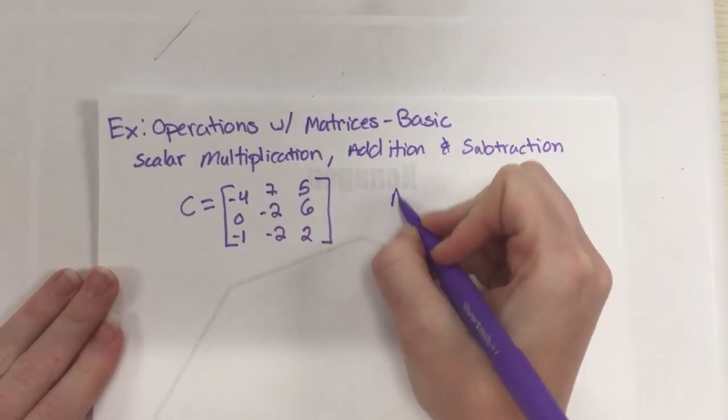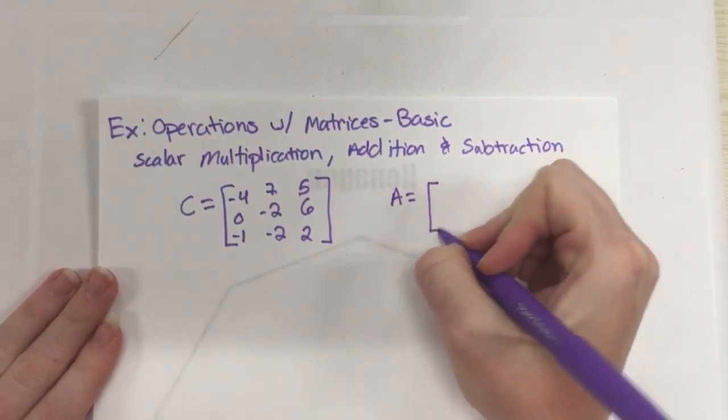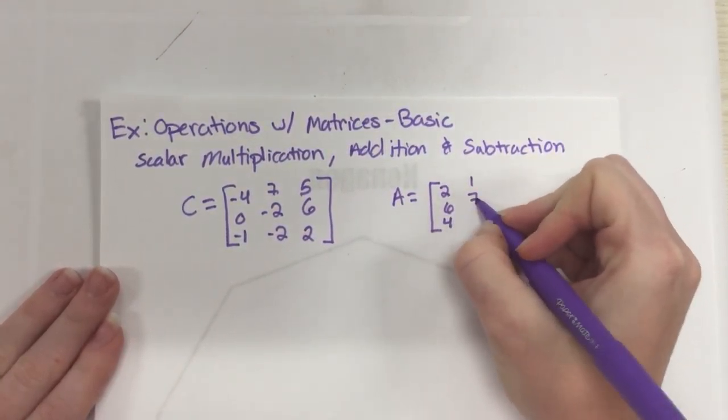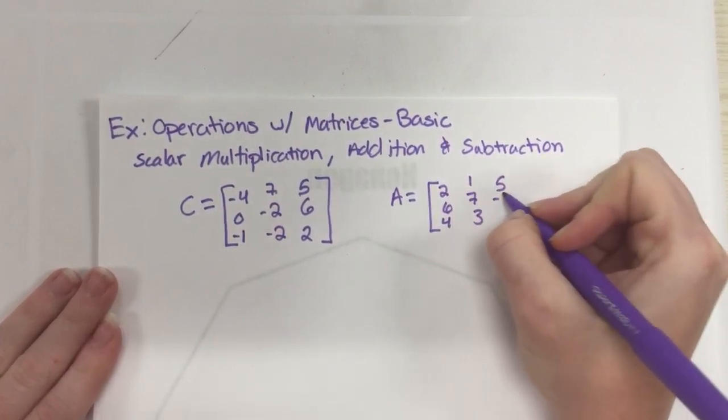And I'm going to take matrix A, which is also a 3 by 3: 2, 6, 4, 1, 7, 3, 5, negative 7, 1.